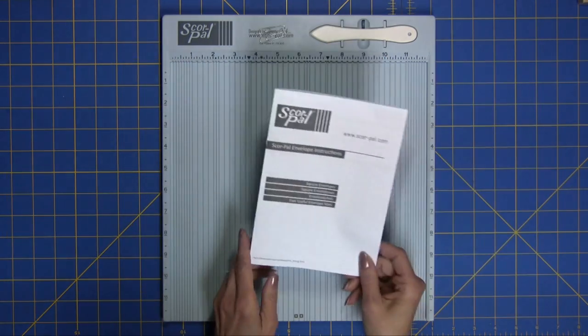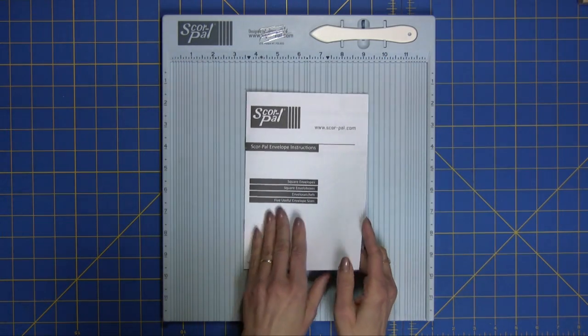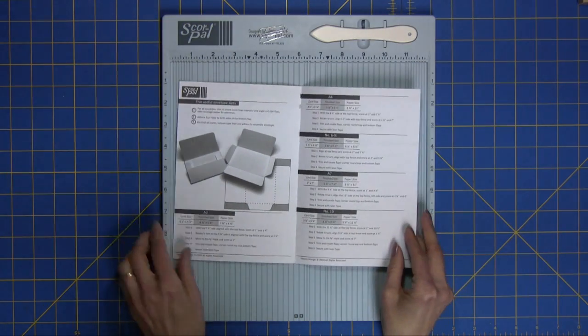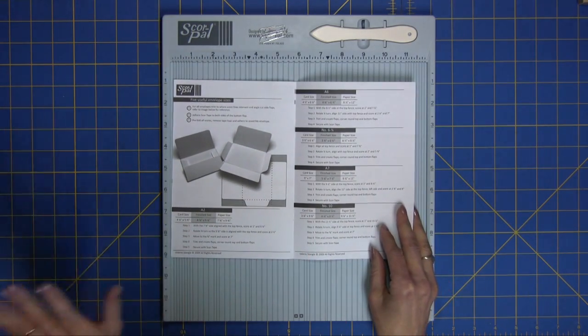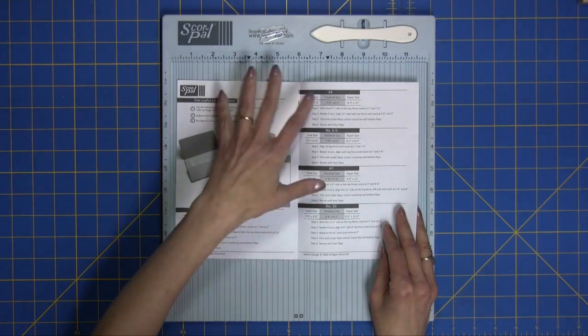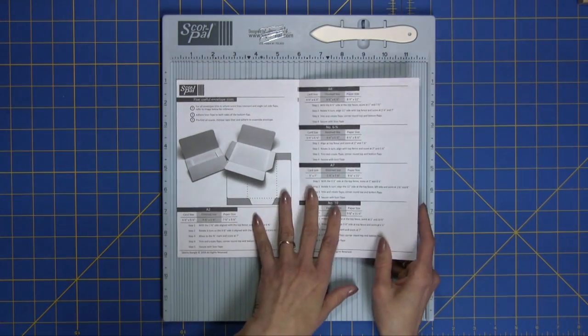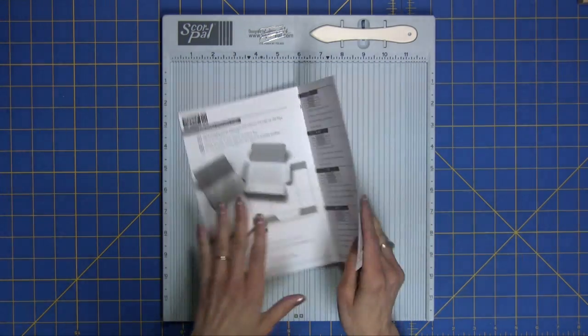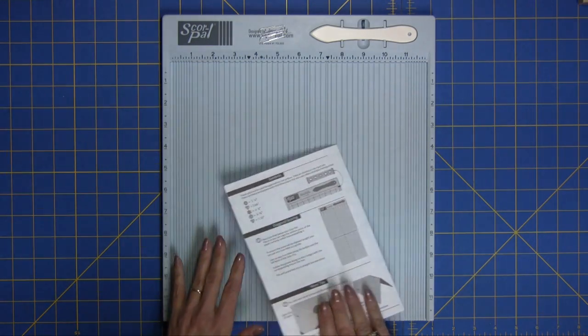The other feature that I love is there's new instructions for the envelopes and they have great instructions on all different types of envelopes, but particularly the A2, the A6, the A7, the number 10, etc. So I'm really very excited about that.